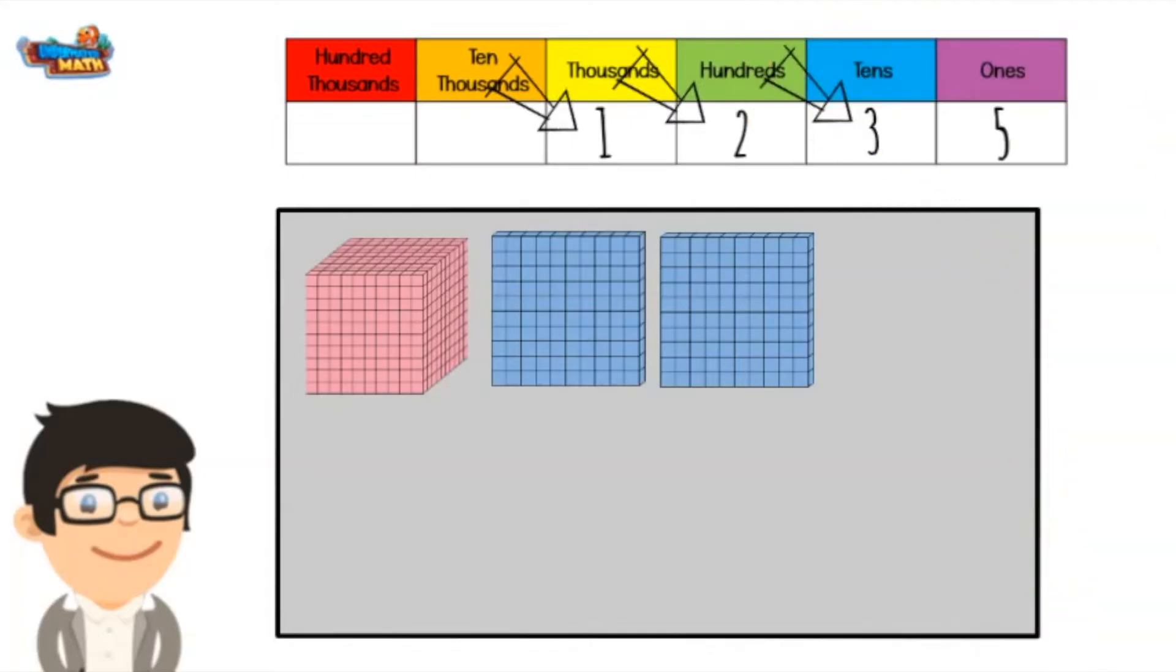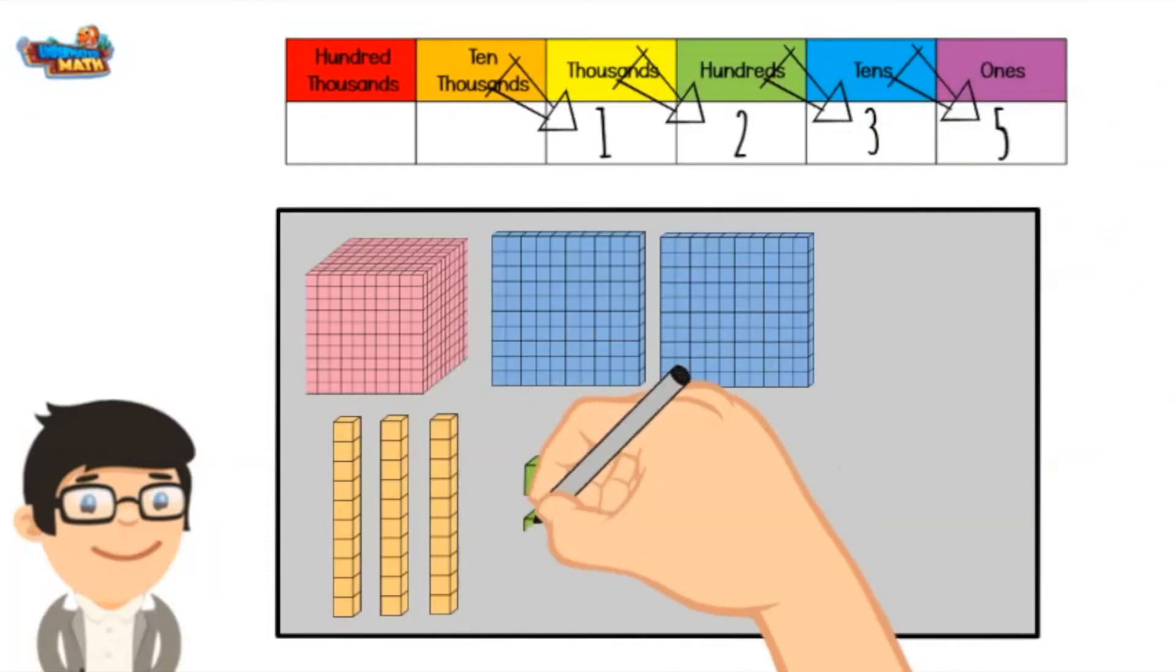In the tens place there is a 3. We need 3 groups of 10. The ones place has 5, so I will put 5 cubes. The number 1235 is represented like this in base-10 blocks.